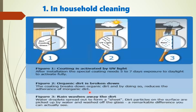Figure three depicts the third step of the mechanism involved in self-cleaning of nanomaterials — rain washes away the dirt. Water droplets spread out to form a sheet, and dirt particles on the surface are picked up by water and washed off the glass, by which we can observe a remarkable difference before and after the self-cleaning process.